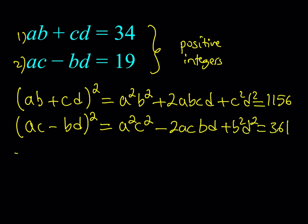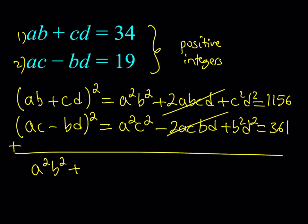What happens if you square A, B plus C, D? And why are we squaring it? It's going to become clear in a little bit. So, if I square this expression, I get A squared B squared plus 2AB CD plus C squared D squared. And obviously, if you square 34, you should be getting 1,156.